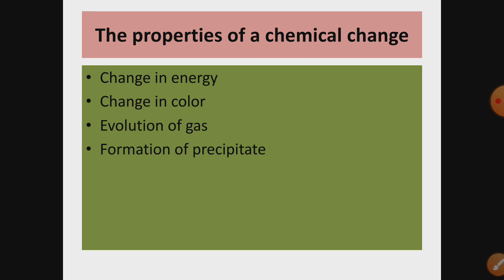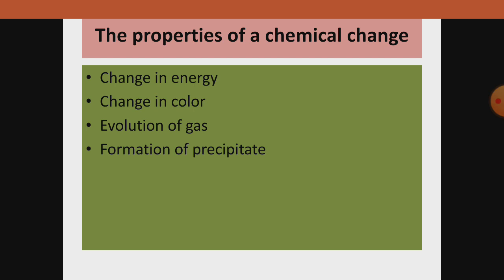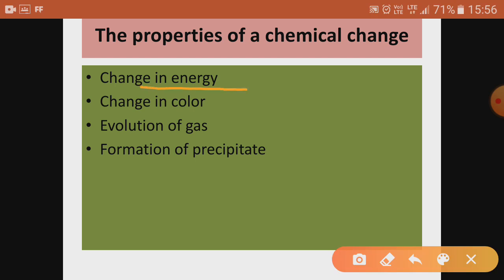Whenever there is a chemical change, there is a change in energy. In some reactions, heat energy is released, while in others, heat energy is used up — it can be either case. For example, in respiration, energy is released. So in chemical changes, we can say there is always a change in energy.